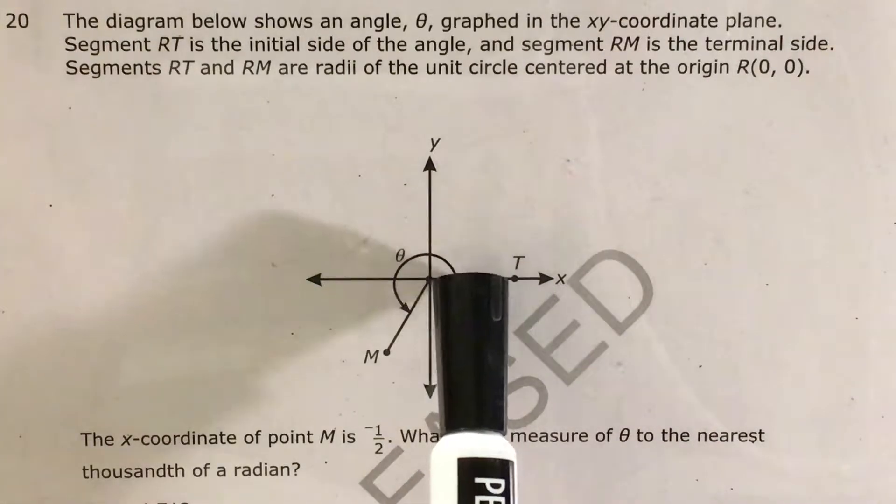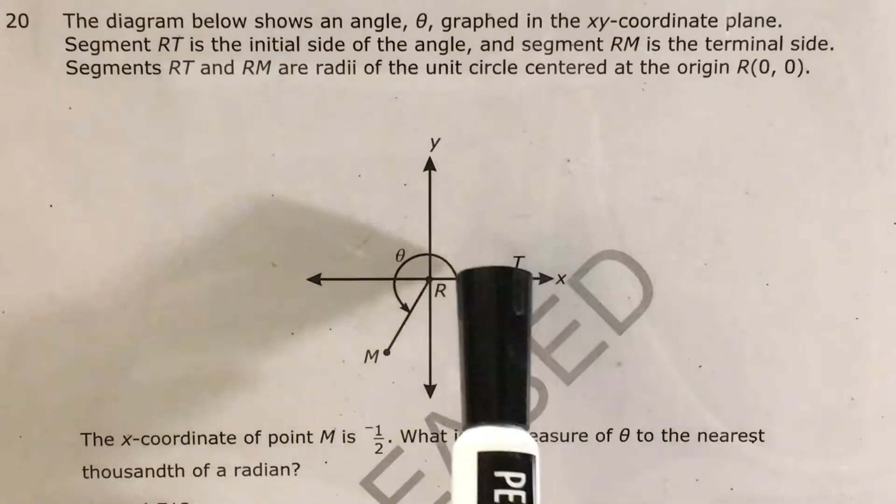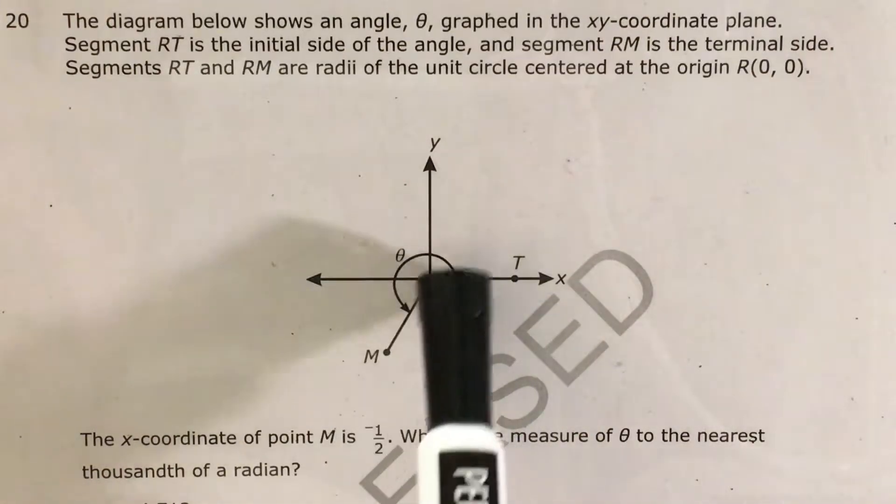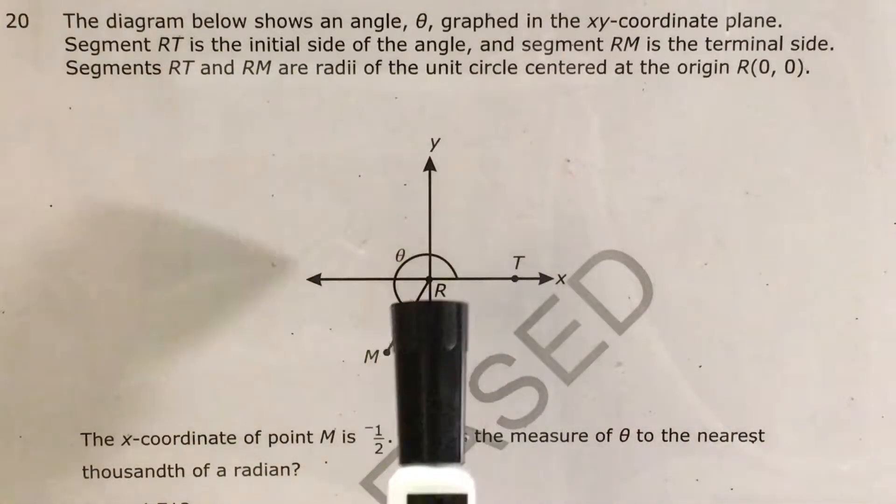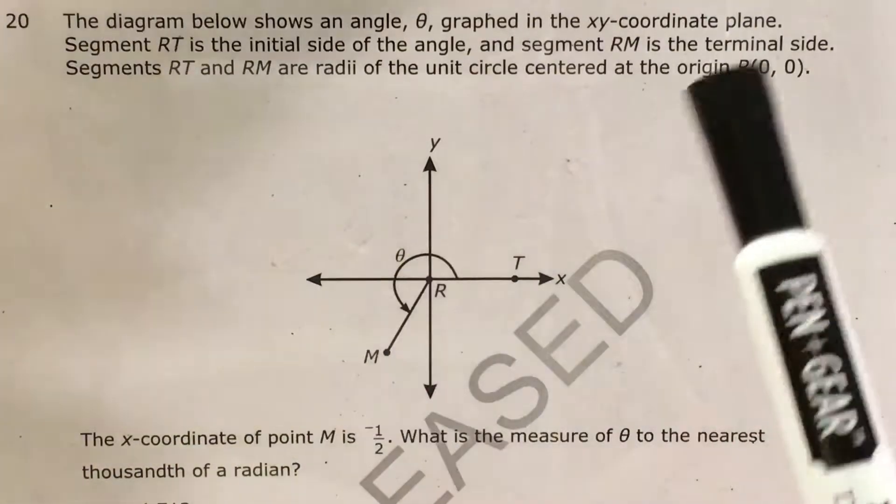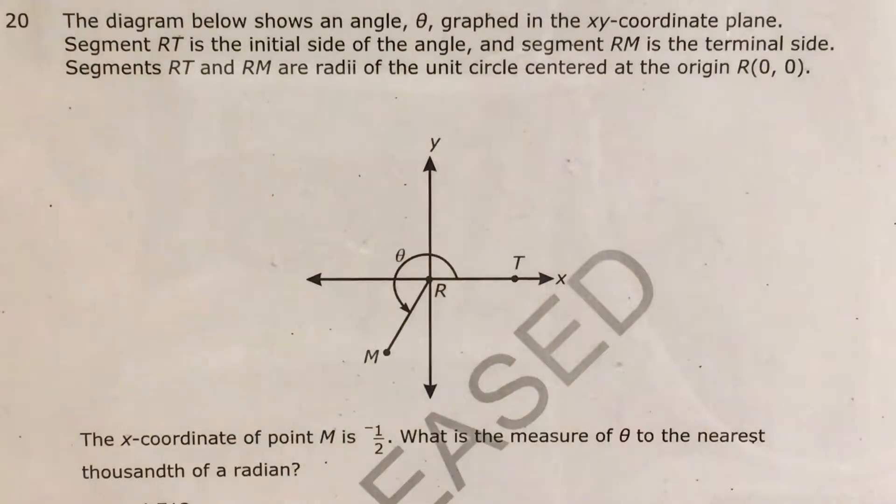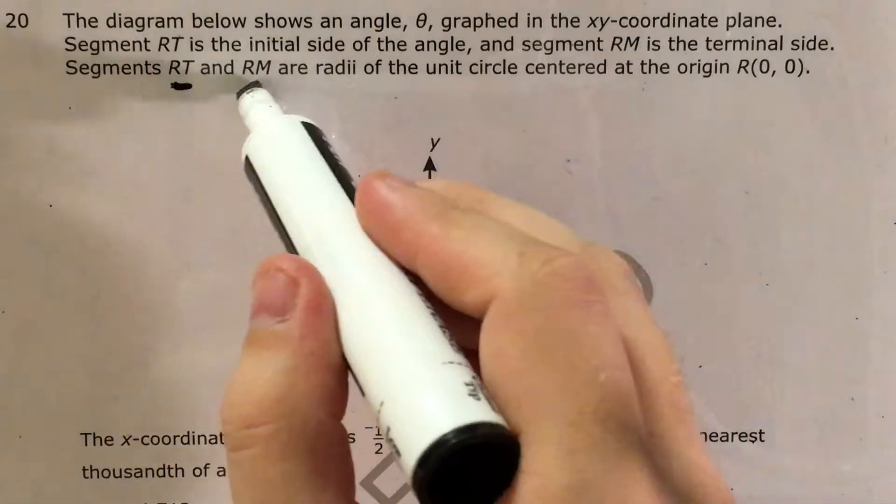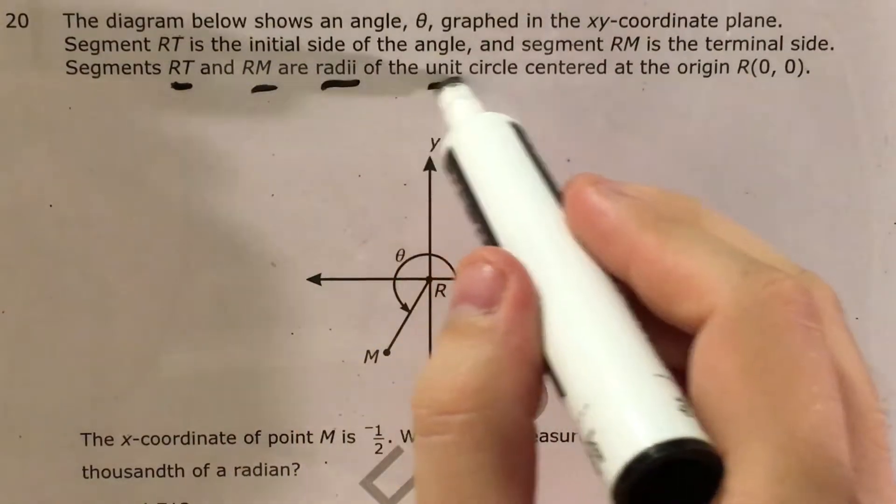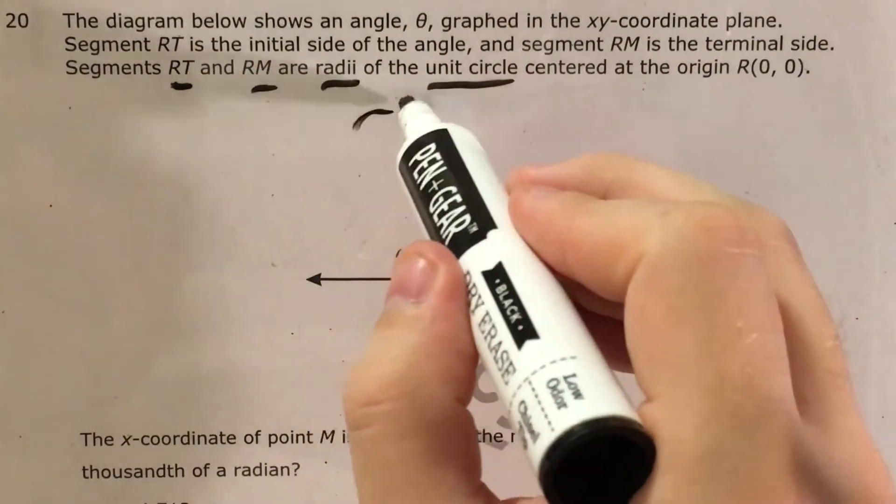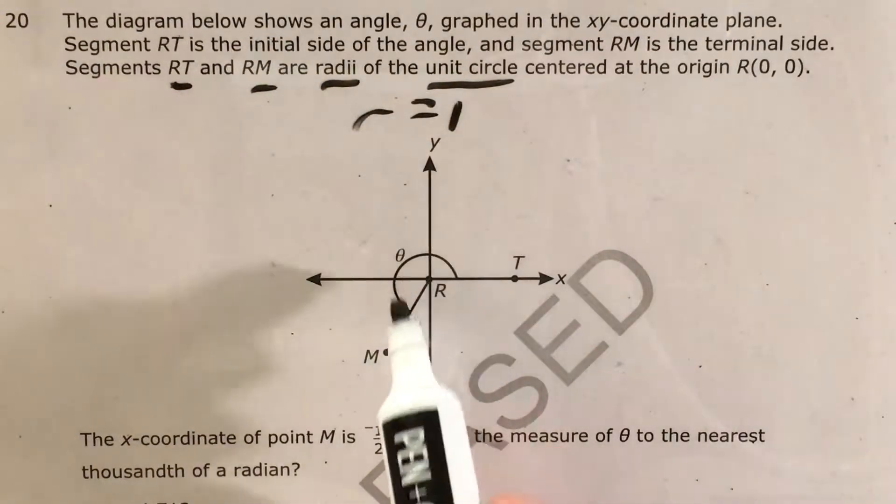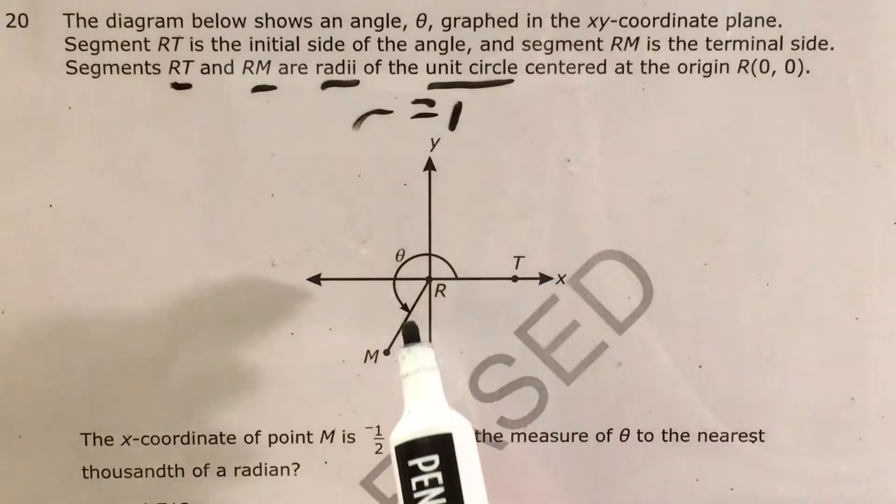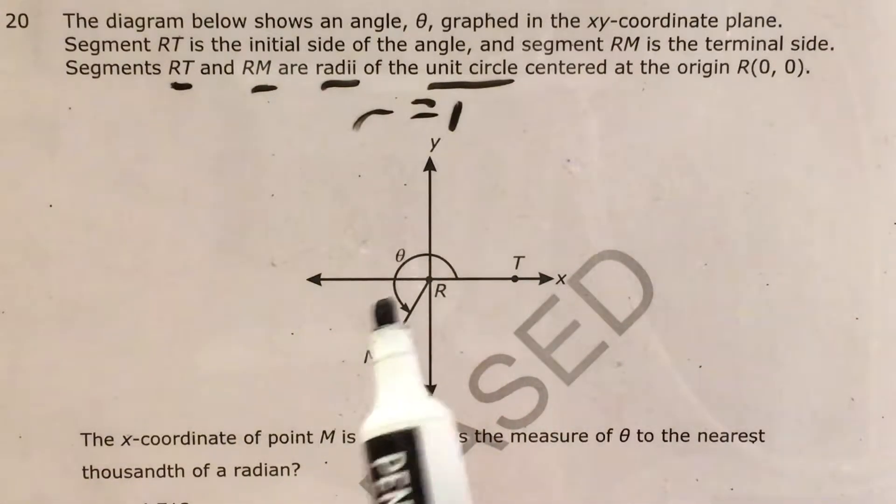The question gives us this angle theta, which goes from the right side of the x-axis down to this line made by point M. It says that segment RT is the initial side and segment RM is the terminal side where it stops. And it also says that RT and RM are radii of the unit circle, so that tells me that my radius is 1, centered at the origin R. We're supposed to figure out the measure of angle theta if we know that the x-coordinate of point M is negative 1 half.